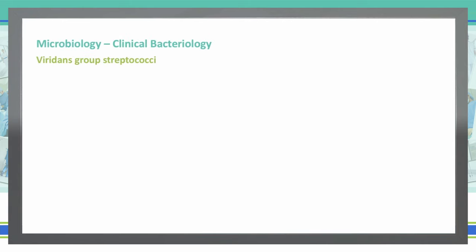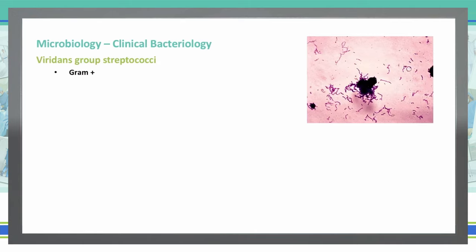Let's continue on and discuss the other Streptococci that is alpha hemolytic, and that is the viridans group Streptococci. It is gram-positive. As you can see in this photo, it turns that pink-purple color on a gram stain — the background is pink and the gram-positive organism is purple. It is alpha hemolytic and a cocci.